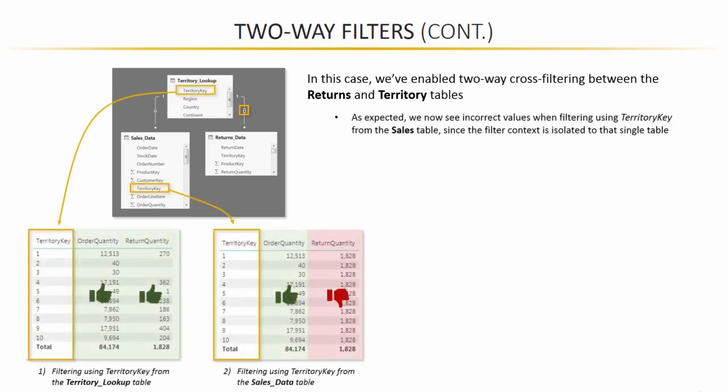What we see this time is that, as always, the territory lookup version of territory key returns the proper values. The territory key pulled from the sales data table returns incorrect return quantities because now that filter context is trapped within the sales data table.